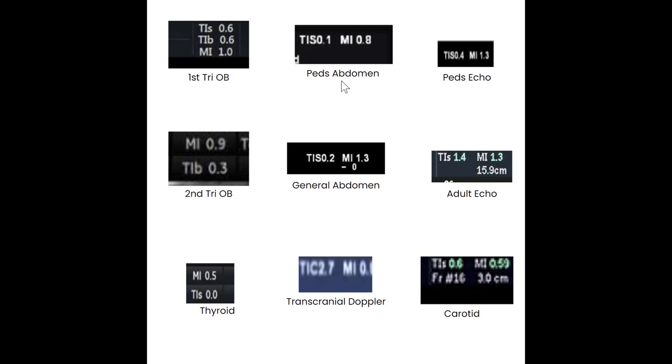Taking a closer look at PEDS abdomen and general abdomen, we are looking at soft tissue thermal indices. We have 0.1 and 0.2, very minimal. Looking at PEDS echo and adult echo, we see a 0.4 with PEDS echo and a 1.4 with adult echo. So we are actually potentially increasing temperature quite a bit with the adult echo settings.